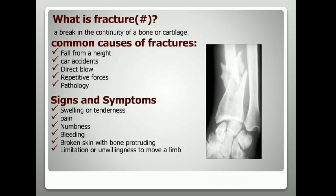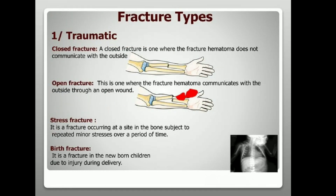Coming to the types of fracture: first, traumatic fractures, which include closed fracture, open fracture, stress fracture, and birth fracture. A closed fracture is one where the fracture hematoma does not communicate with the outside. An open fracture is one where the hematoma communicates with the outside through an open wound. A stress fracture occurs at a site subjected to repeated minor stresses over time. A birth fracture occurs in newborns due to injury during delivery.